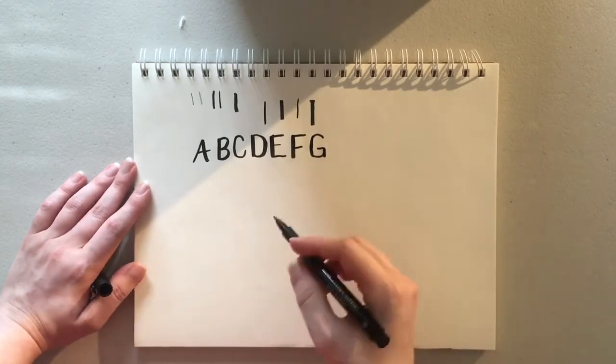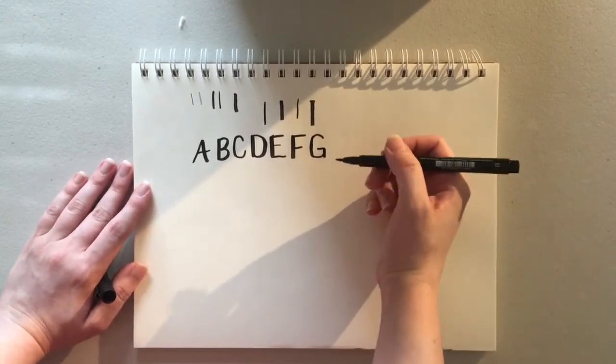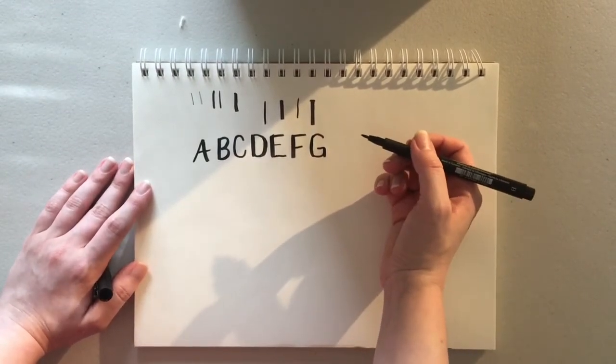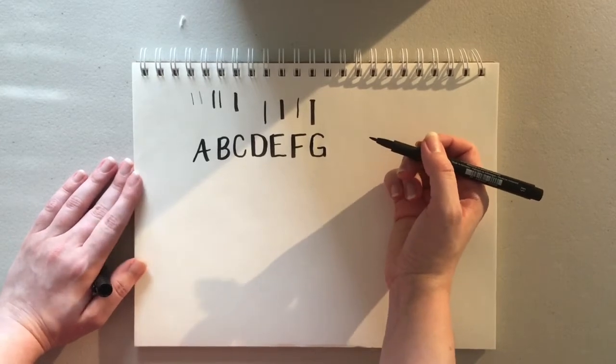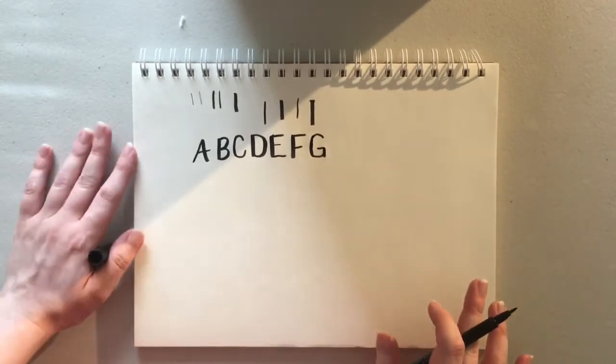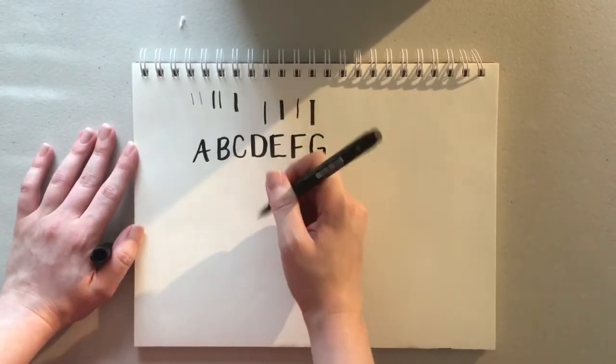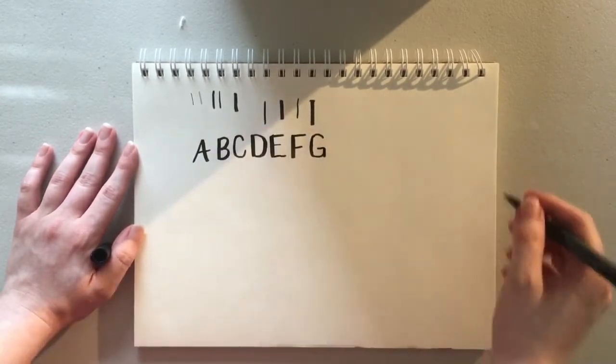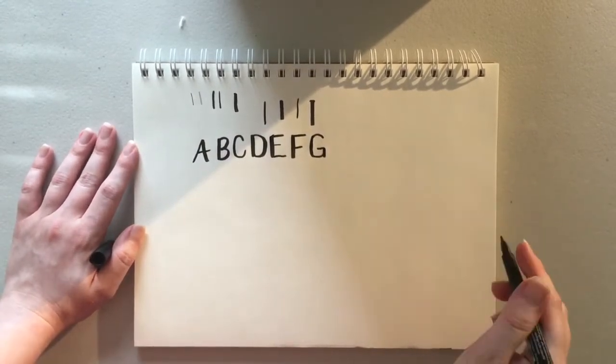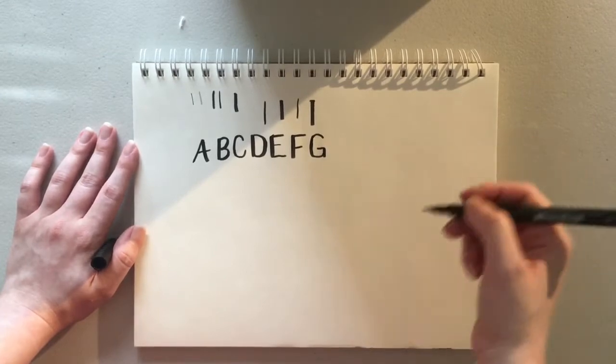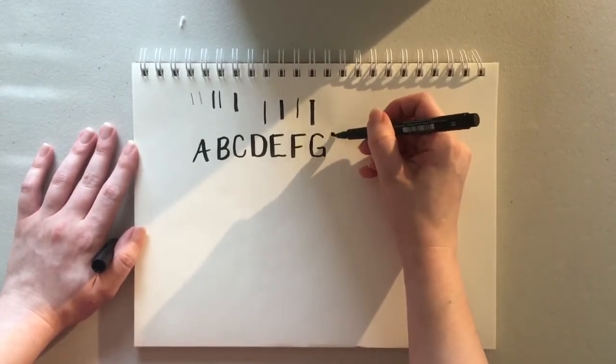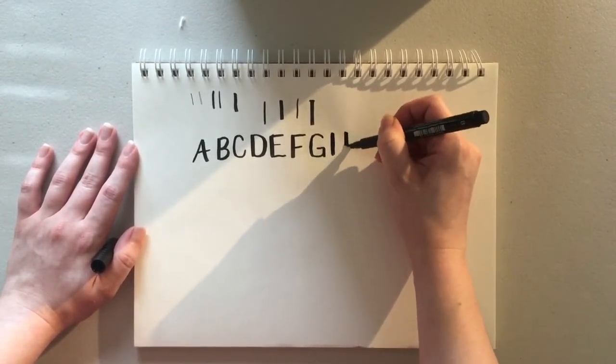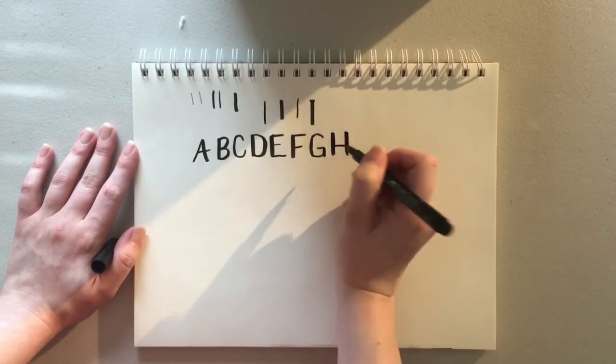Now what you might notice is that I'm picking up my pen after each individual stroke. You'll see a lot of very professional hand lettering artists who can do this automatically as they're writing and just continue a whole word. But the best way to do it is actually to do each stroke on its own. So I would go down, down, and across.